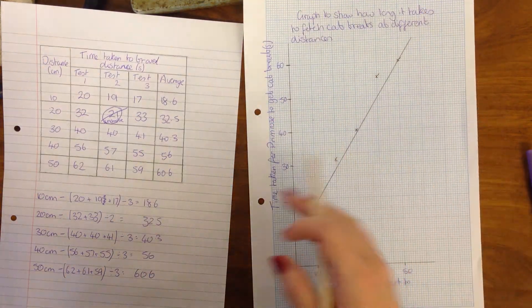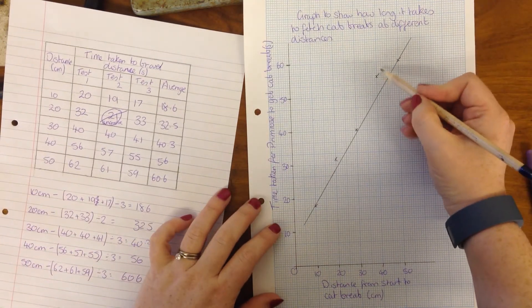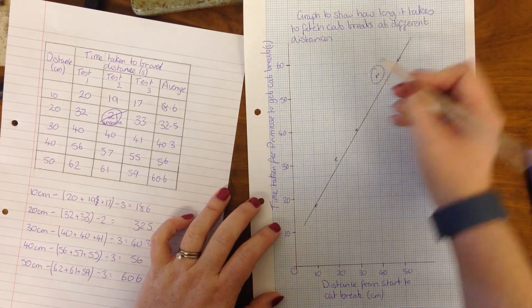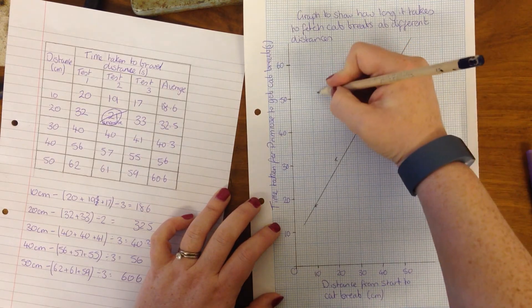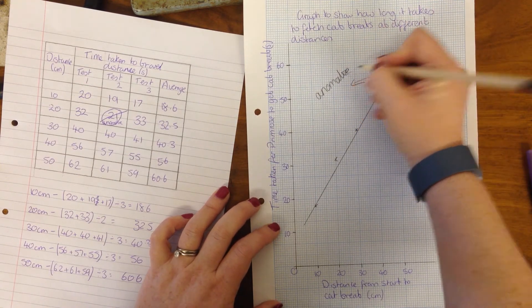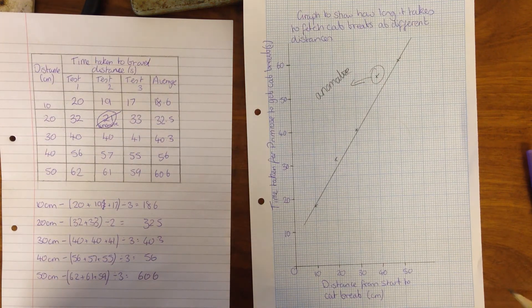And you can see that four of the points are very close to the line, and this one here isn't very close to the line. So what I'm going to do is draw a circle around that one, put an arrow and label that an anomaly. There you go, that is a lovely graph of your iso.